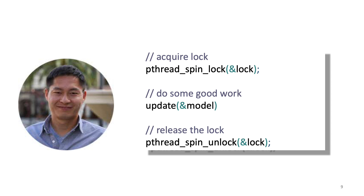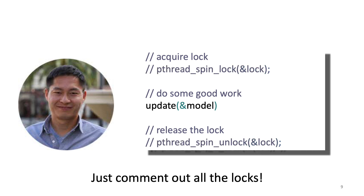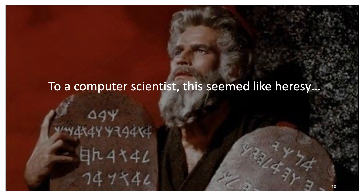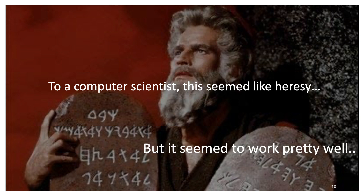Then one day, Fung came into my office and announced, "It's going faster." I was incredibly excited — I told him let's go get some coffee. At that point, Fung got a touch sheepish and said, "I commented out all the locks." I was stunned. To a simple computer scientist like me, this was heresy. We taught people locking protocols to avoid dangerous, incorrect values. But I couldn't get too high and mighty, as Fung's approach seemed to be getting the right answer.